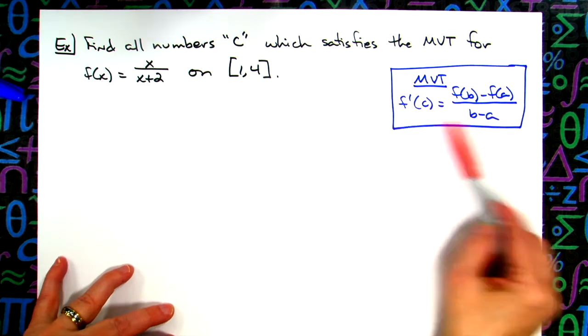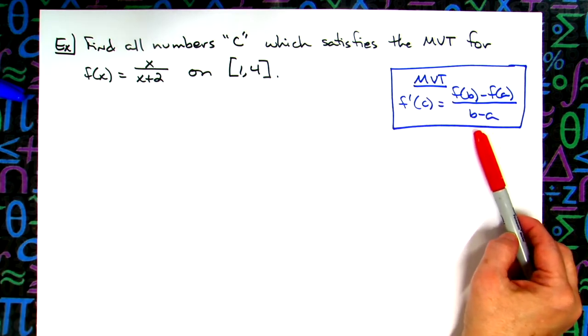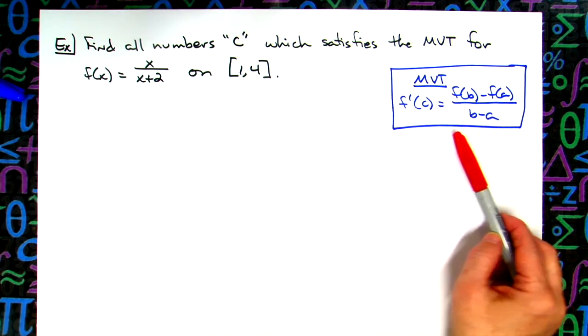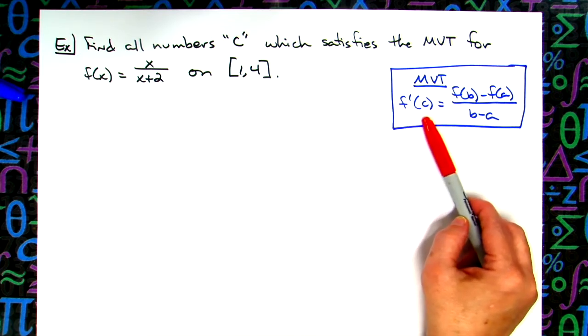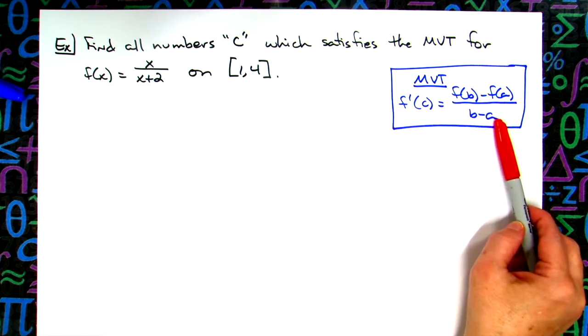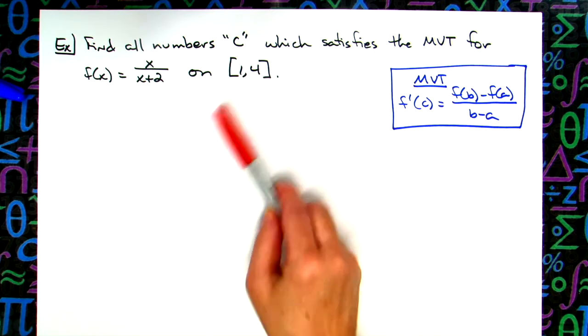Now over here I have written down the meat of the mean value theorem. It's saying that you can take the derivative at a given point and set that equal to the average rate of change on that interval from 1 to 4.